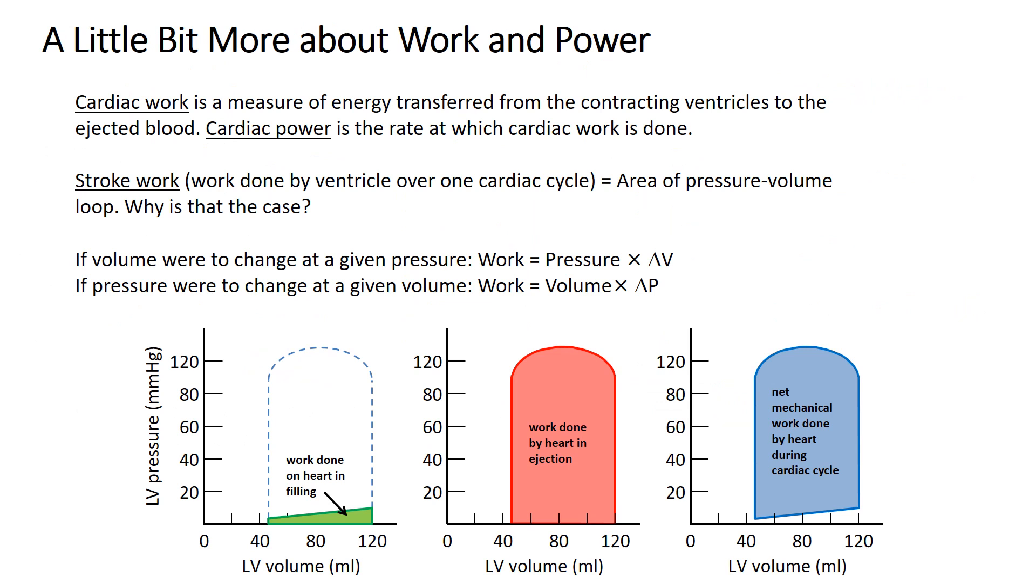Remember, cardiac work is the work done by the heart over some specified time in pumping the blood. Cardiac power is the rate at which cardiac work is done. Now for a new related definition: stroke work. Stroke work is the work done by the ventricle over one cardiac cycle. It turns out that the stroke work is equal to the area enclosed by the pressure-volume loop. That's one of the reasons why visualizing pressure-volume loops helps us think about the mechanical function of the heart.